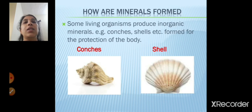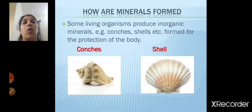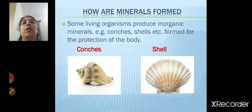Next is about conches and shells. Some living organisms produce inorganic minerals — for example, conches and shells. They are formed from the protection of the body. The shell is a living organism and from the shell you get pearl. From that, the mineral is formed.